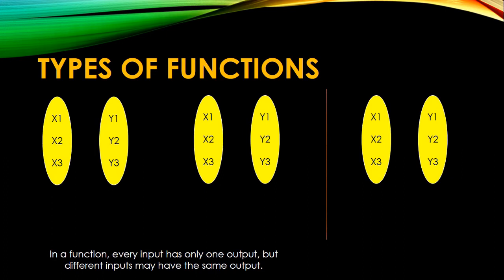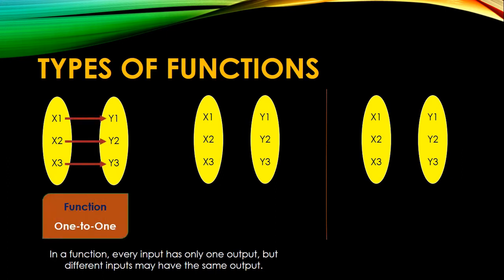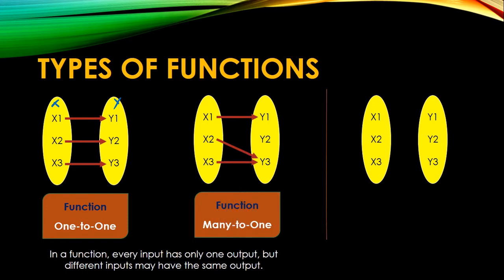So these are the types of functions. We have one-to-one function. So you can see that each value here in your X is paired with one value of Y. So that's a one-to-one relation. Next is, we have here the functions many-to-one. So many-to-one meaning, different values in the domain can have the same output.